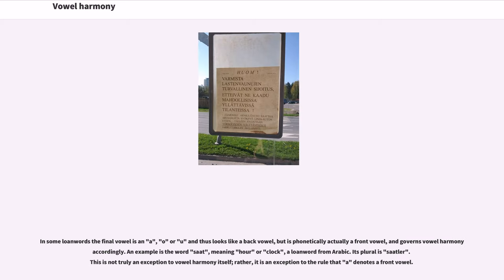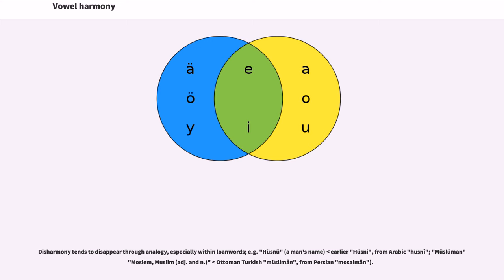In some loan words the final vowel is an a, o, or u and thus looks like a back vowel, but is phonetically actually a front vowel and governs vowel harmony accordingly. An example is the word saat, meaning hour or clock, a loan word from Arabic; its plural is saatler. This is not truly an exception to vowel harmony itself, but an exception to the usual spelling convention. This harmony tends to disappear through analogy, especially within loan words — for example, Müslüman from Arabic Muslim and Ottoman Turkish Müslim, and from Persian Mosulman.